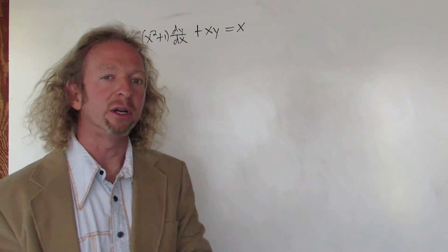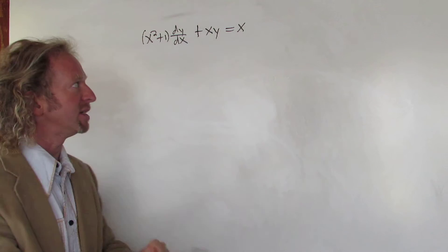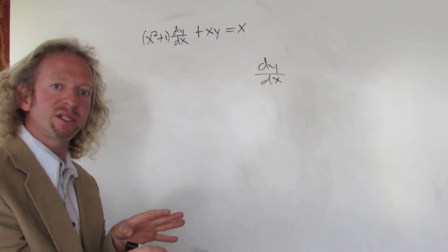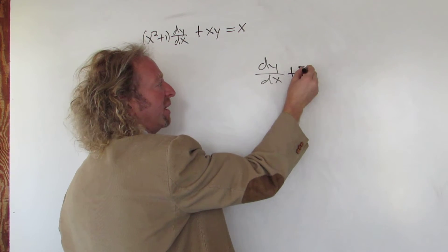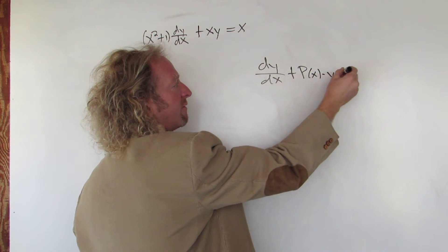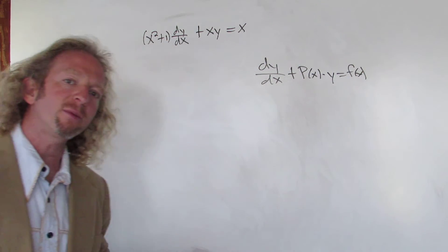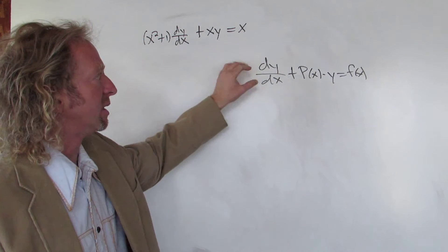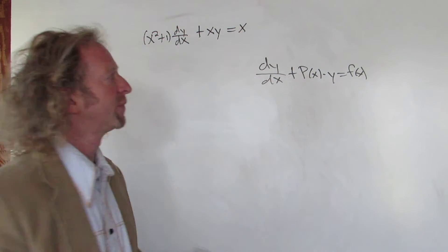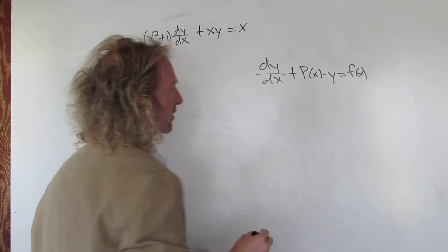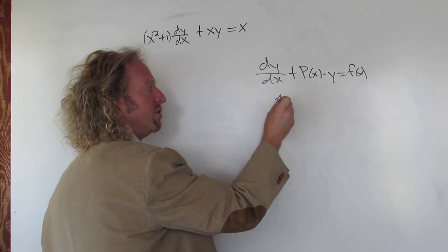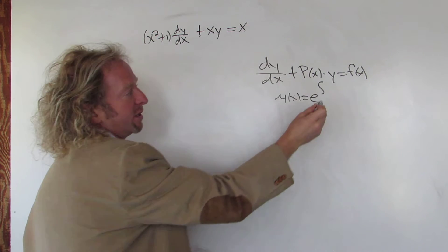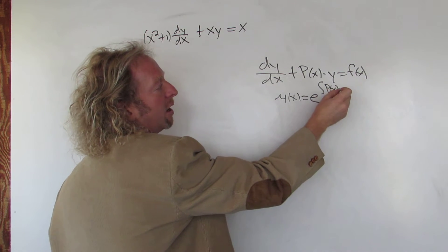This differential equation appears to be linear. A linear DE is one that can be written in the form dy/dx plus P(x)·y = f(x). If you can write a DE in this form, we say it's linear. This is a first-order differential equation because the order of the highest derivative is 1. You compute something called the integrating factor, μ(x), which is always e to the integral of P(x) dx.